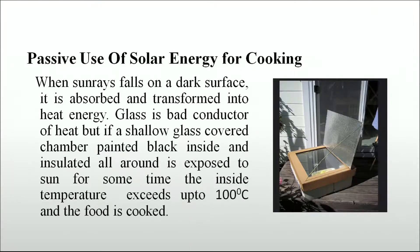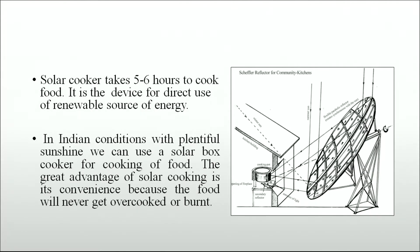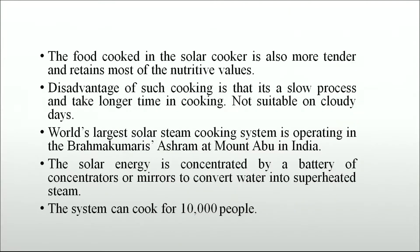When sun rays fall on a dark surface, they are absorbed and transformed into heat energy. A shallow glass-covered chamber painted black inside and insulated all around, when exposed to the sun, can exceed 100 degrees centigrade inside and cook food — this is the solar cooker. The solar cooker takes 5 to 6 hours to cook food. In Indian conditions with plentiful sunshine, a solar box cooker is ideal. The great advantage is convenience — food will never get overcooked or burnt, and retains most nutritive values.